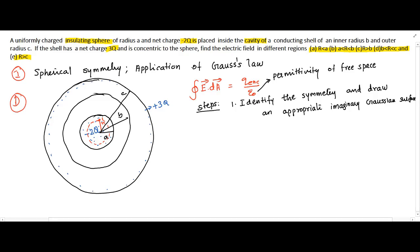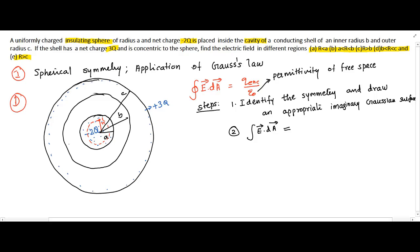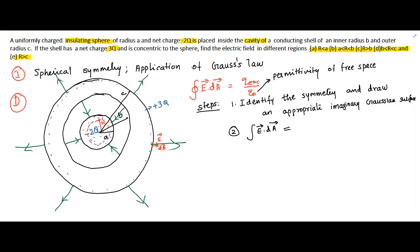Now we should evaluate Gauss's law. We first evaluate the surface integral E dot dA on the left side — this is the second step. For that, we need to know how the electric field and area are oriented. The field lines from the central negative sphere point radially inward, and the shell's field lines point radially outward. So the electric field at any point on the surface is perpendicular to the surface element, meaning E and dA are parallel. So we can write the integral E dot dA equals integral E dA cos theta, which equals integral E dA since theta is 0 and cos theta is 1.